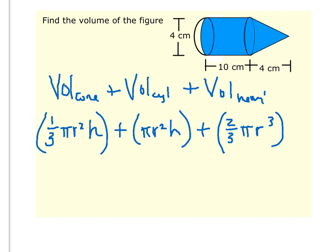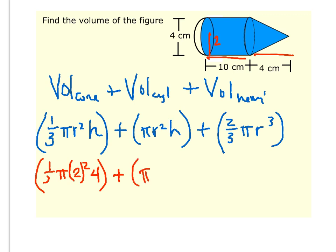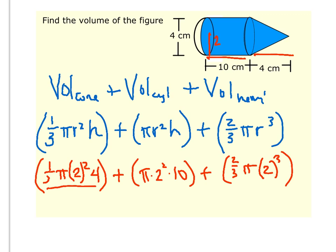Now that we have our formulas, it's just a matter of entering in the information. In the picture we have the height of the cylinder, the height of the cone, and the diameter of the circle which is 4, so the radius we're going to use is 2. So: one-third times π times 2 squared times the height of the cone, which is 4, gives us — 2 squared is 4, times 4 is 16, times one-third — I'm just going to leave it as 16/3 π.